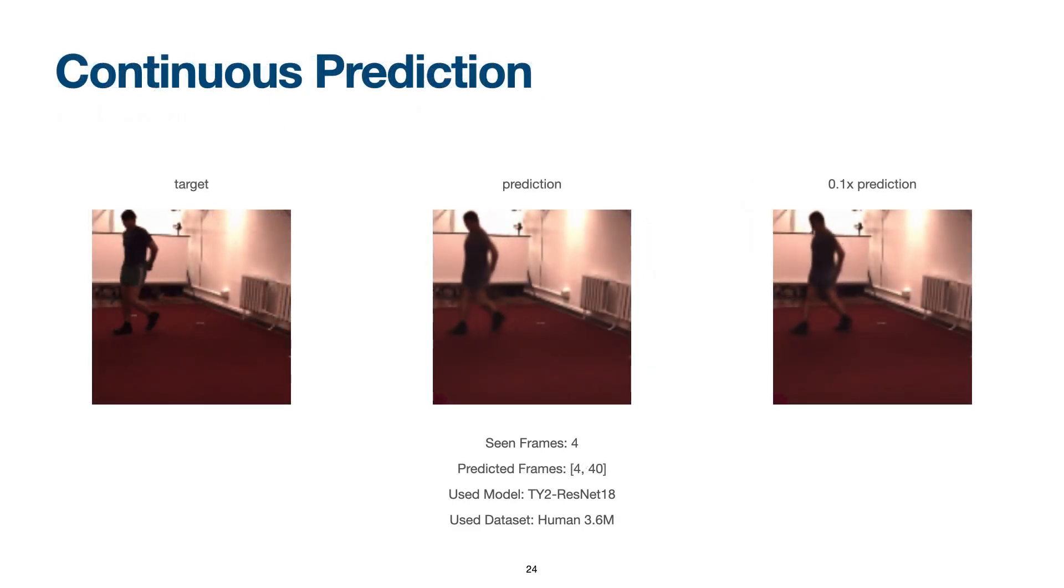As we mentioned before, our approach is able to predict future frames with a higher sampling rate. Therefore, we can generate a slow motion version of the normal prediction.